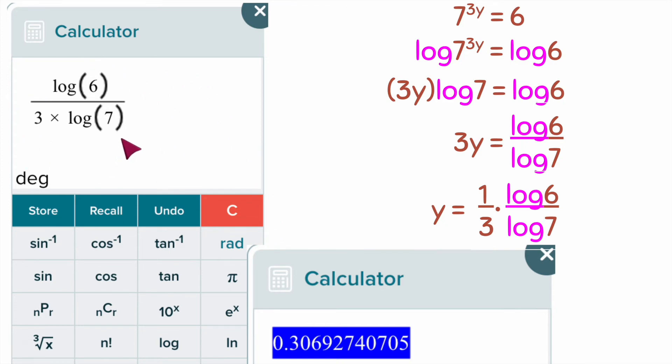This is what the calculator looks like on Alex. I'm going to have log, it's a base 10, right, with 6. Then the 3 is on the bottom. I don't need to put the 1 on top because 1 times the log of 6 is not going to change anything, but I do have 3 times the log of 7 on the bottom.